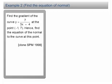Example 2, finding the equation of normal. Find the gradient of the curve y equals 7 over 3x plus 4 at the point (-1, 7). Hence, find the equation of the normal to the curve at this point.